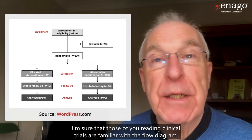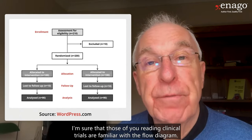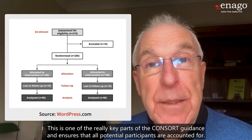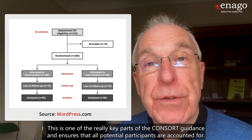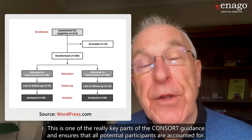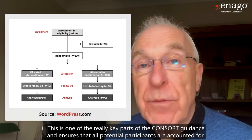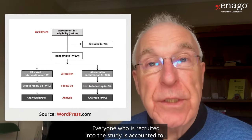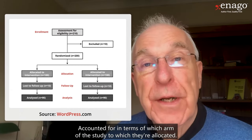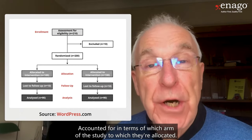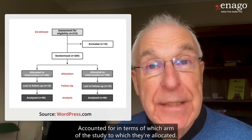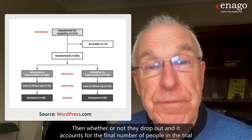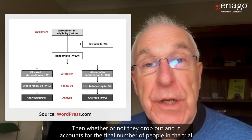I'm sure that those of you reading clinical trials are familiar with the flow diagram. This is one of the really key parts of the CONSORT guidance, and it ensures that all potential participants are accounted for, everyone who is recruited into the study is accounted for in terms of which arm of the study to which they're allocated, then whether or not they drop out, and it accounts for the final number of people in the trial.